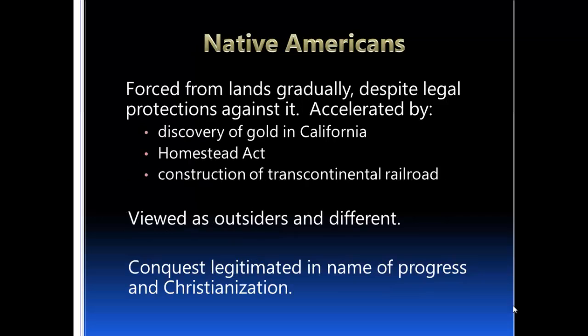Native Americans were forced from their lands during this period, particularly during the Andrew Jackson administration in the 1830s. They were gradually forced from their lands even though there were legal protections against it. This was partly accelerated by the discovery of gold in California, the Homestead Act — which encouraged settlement of Nebraska, Kansas, and Missouri — and the construction of the transcontinental railroad. Native Americans were viewed as outsiders even though they were the original settlers on this continent.